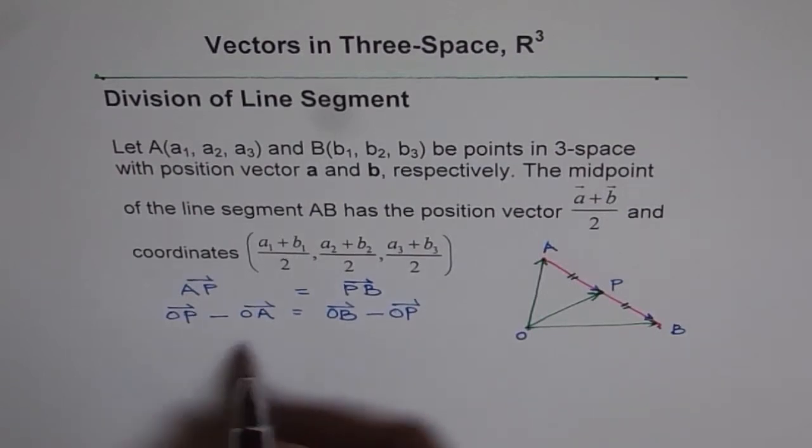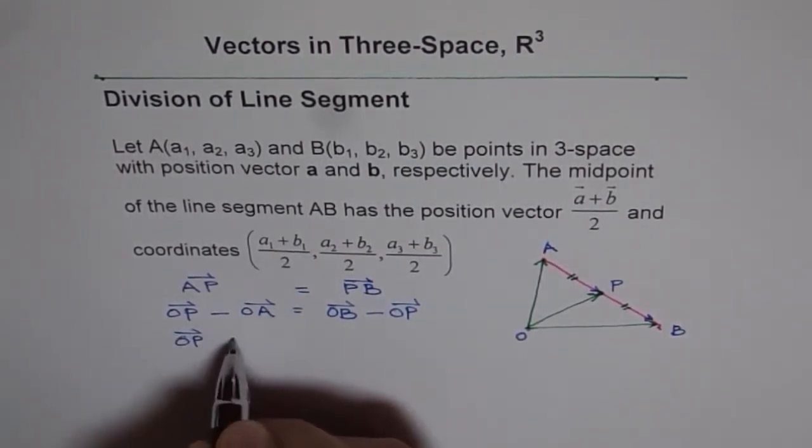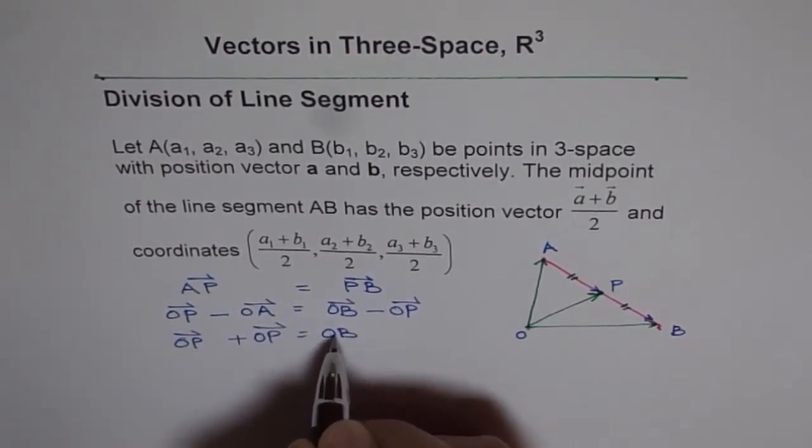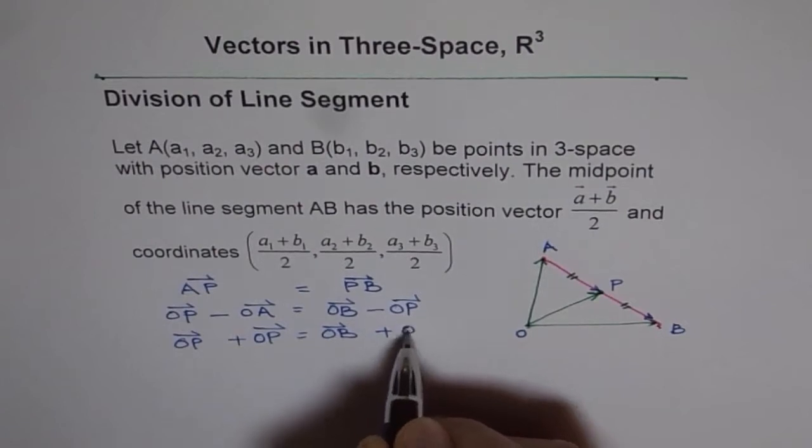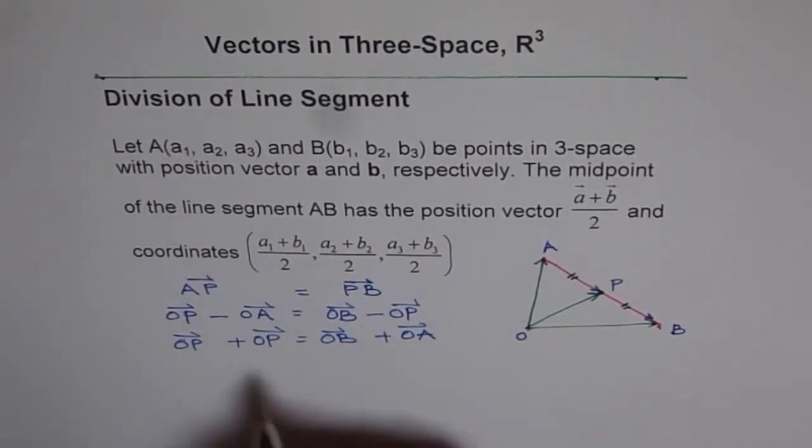And now we can reorganize it, bringing OP to the left side. So we get OP plus OP equals OB plus OA. Now OP plus OP is 2 times OP.